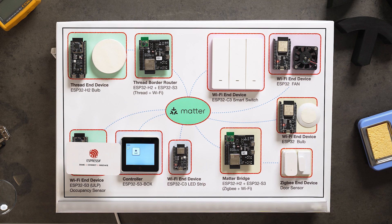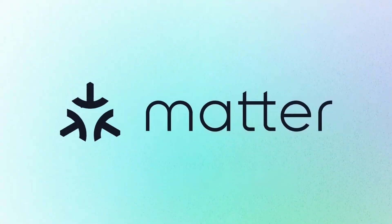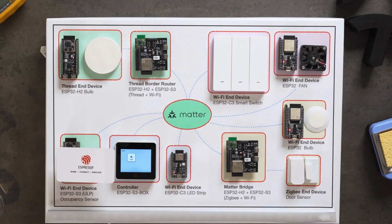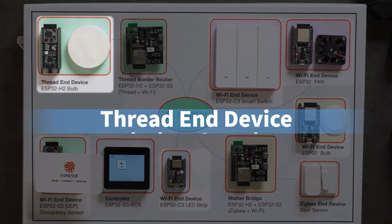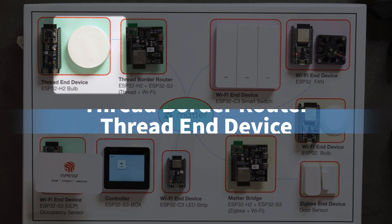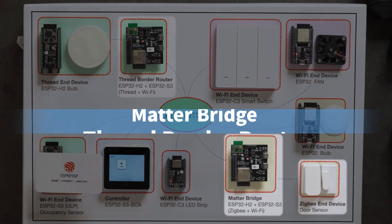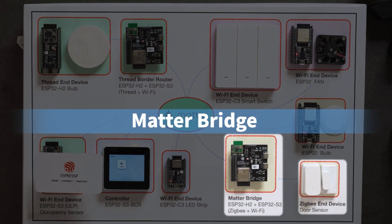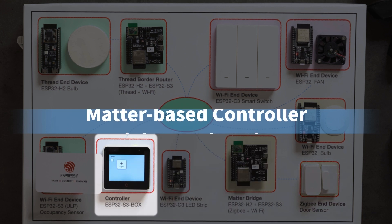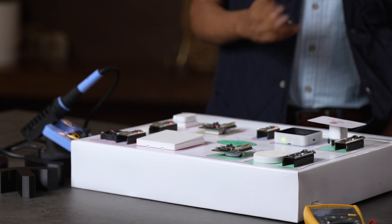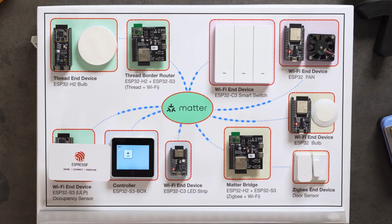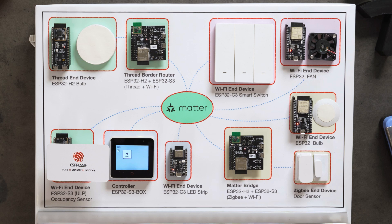Here we have a demonstration which shows the typical classes of devices that are supported by Matter. We'll talk about a Wi-Fi end device, a Thread end device and the border router, a Matter gateway that bridges to a Zigbee device, and a Matter-based controller. As you can see, we have assembled a bunch of devices that have already been commissioned into a Matter fabric and we have defined device bindings so that the appropriate device controls the right devices.